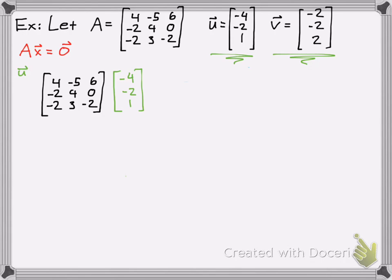So we take A times U, and we just simply do matrix multiplication. Remember, row times column. So 4 times negative 4 is negative 16. Then we get 5 times 2 is 10, and then we get 6. Add those up. Let's do the next one. 8 plus or minus 8 plus 0. And then we have 8 minus 6 minus 2. Add all those up. What do we get? 0, 0, and 0.